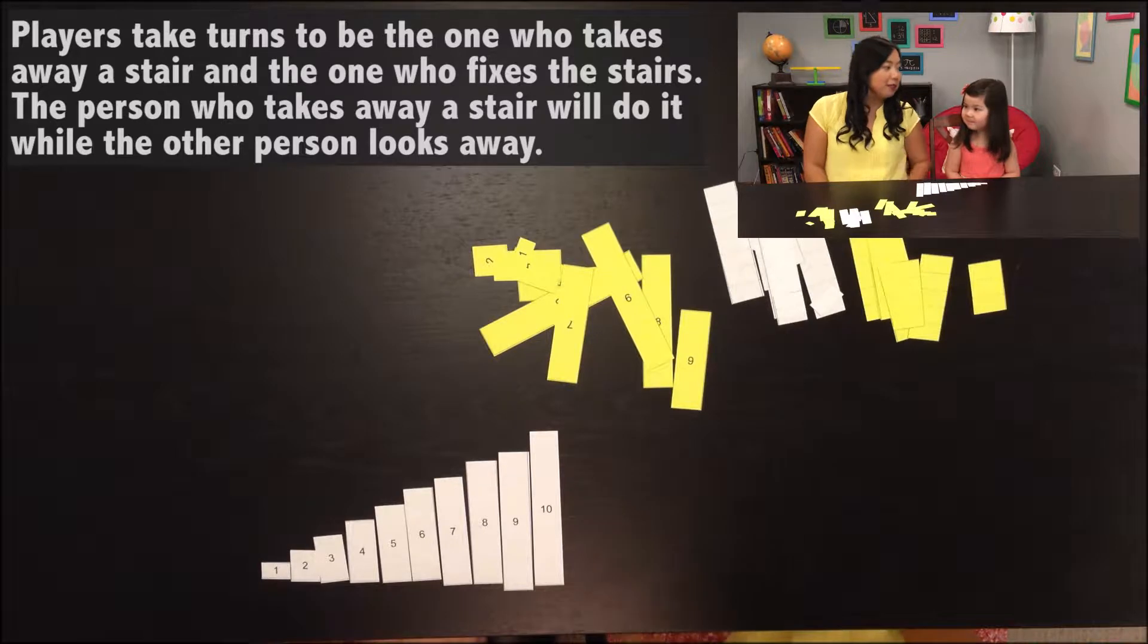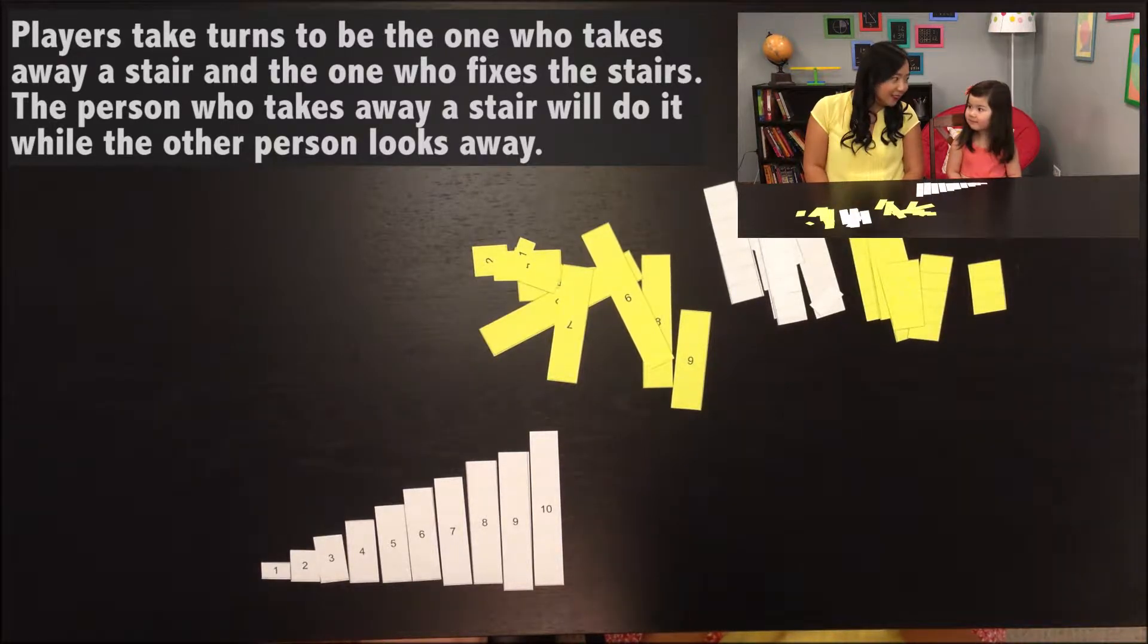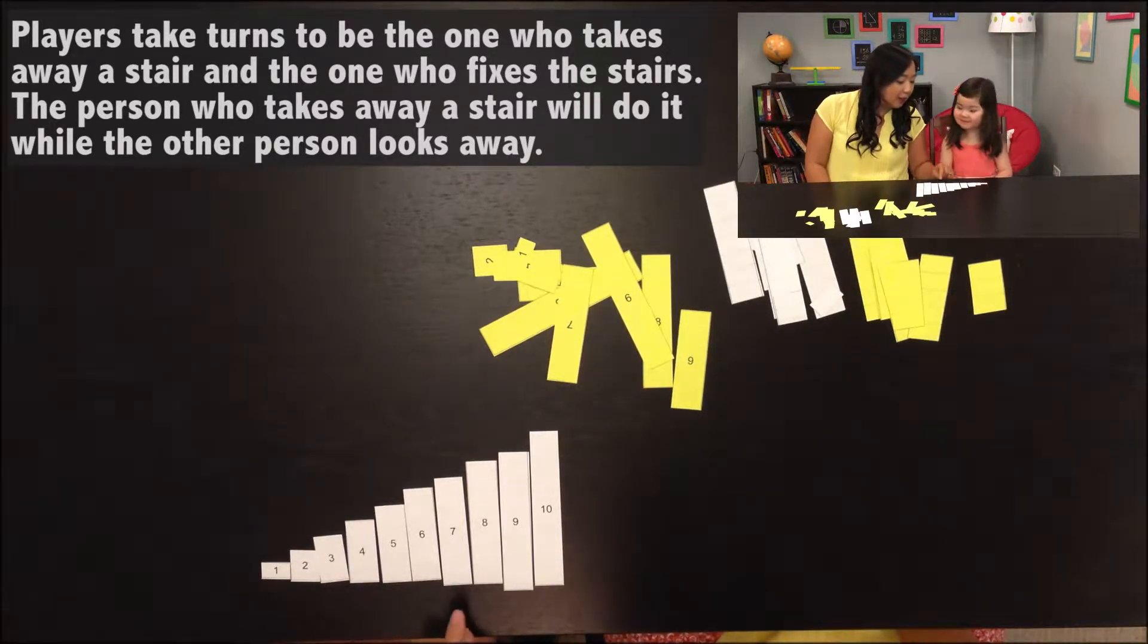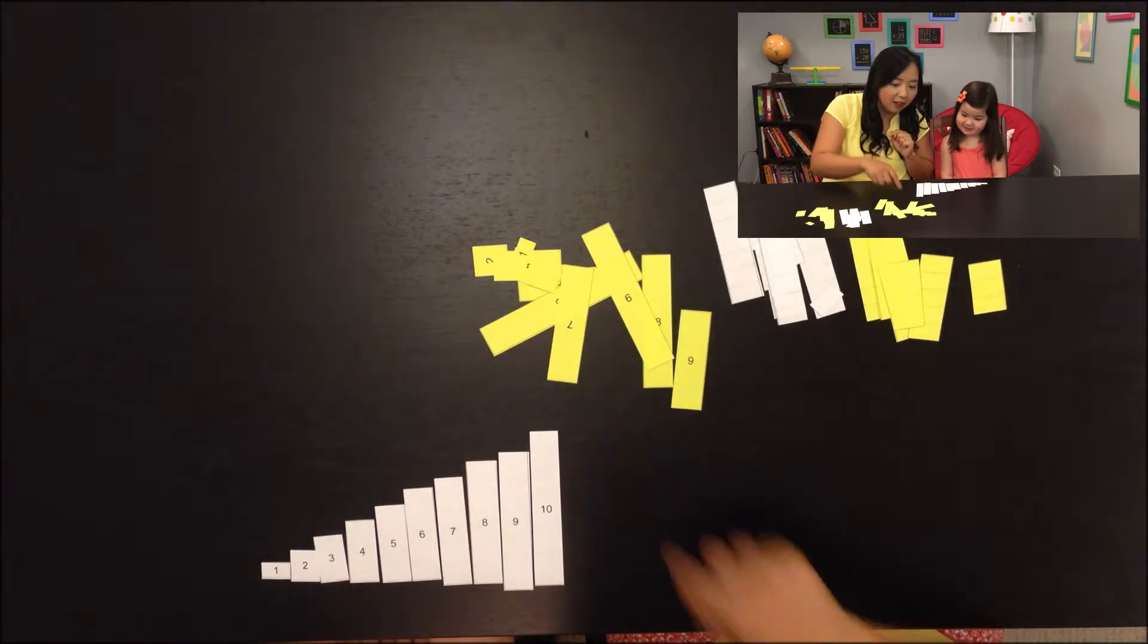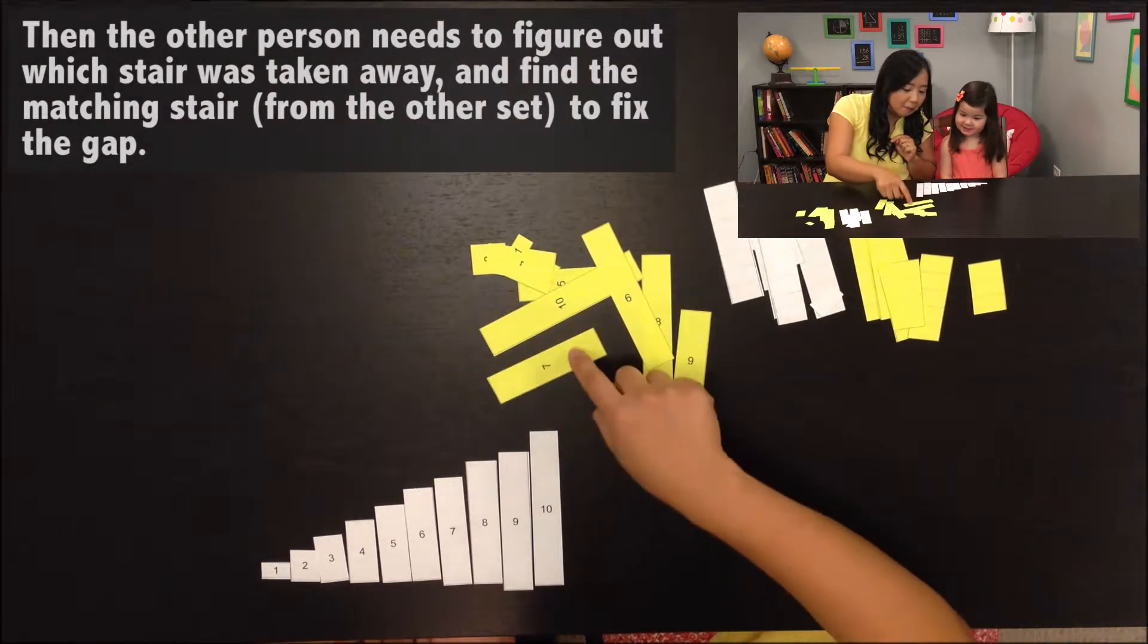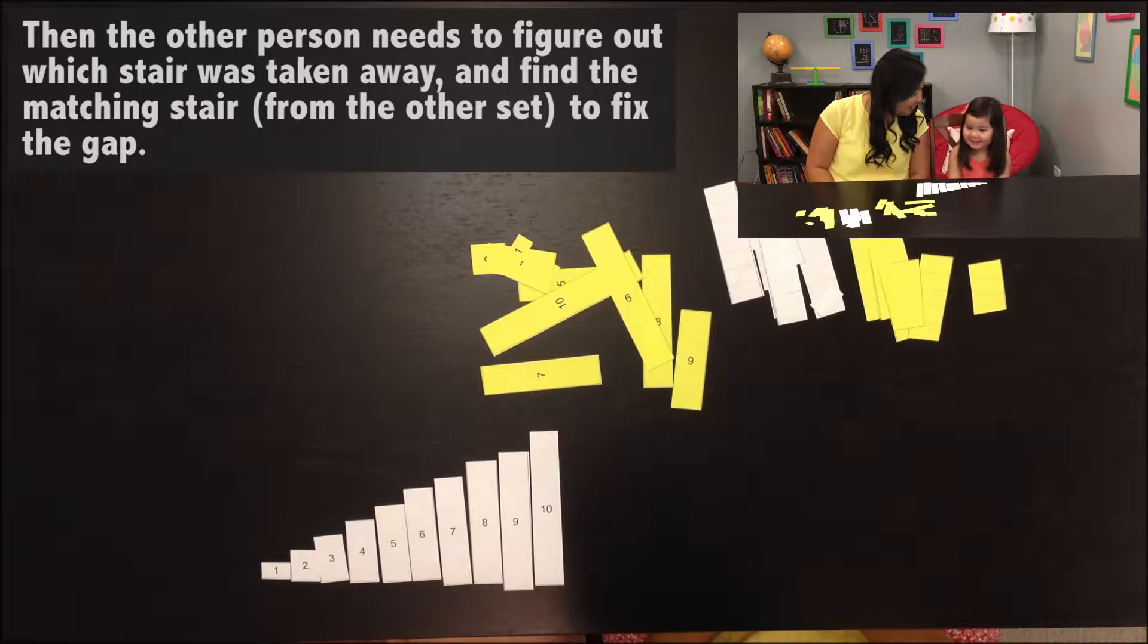And while you take it away, I need to look away so I don't know which one you're going to take away. So after you take that one away, you keep it in your hand so I don't see. I need to figure out which number is missing and I'm going to find the yellow matching stairs to fix it.